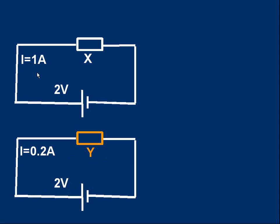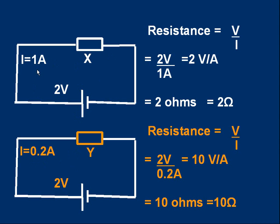What conclusion can we draw? Well, it seems that it's more difficult to push the current through Y than it is through X. We use the same voltage, the same potential difference in both cases, and the current was five times smaller for Y than for X. And we say that the resistance of Y is bigger than X. In fact, the resistance of Y is five times bigger than the resistance of X because it only lets one fifth of the current through compared to X.